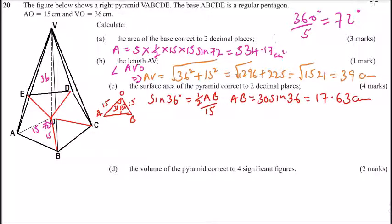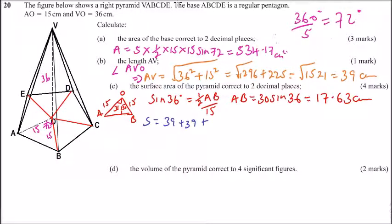Now, using the Hero's formula, we get S equals 39 plus 39 plus, that is the two slanting sides, and then we have AB which is 17.63, and you divide by 2. So that gives you 47.84.